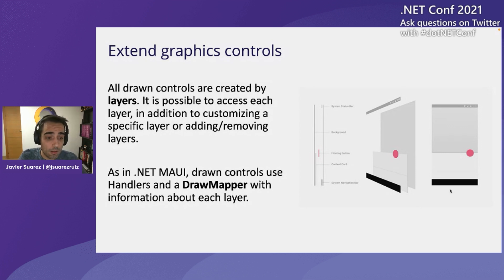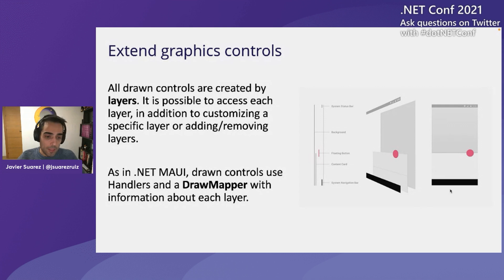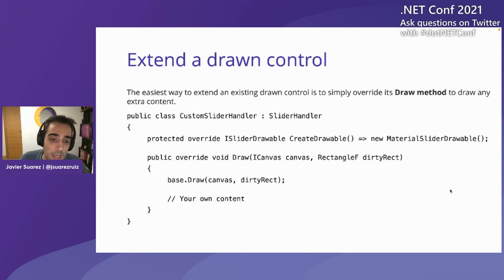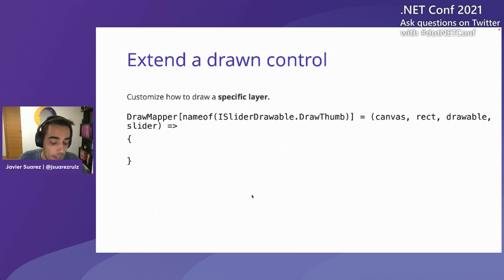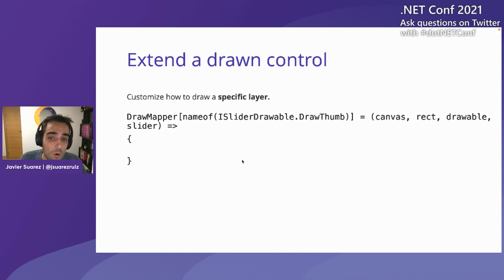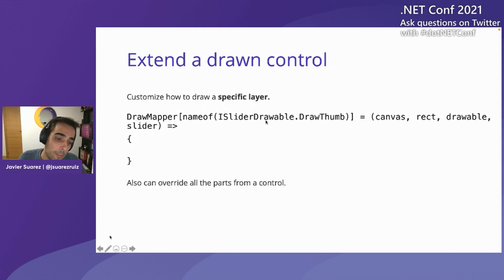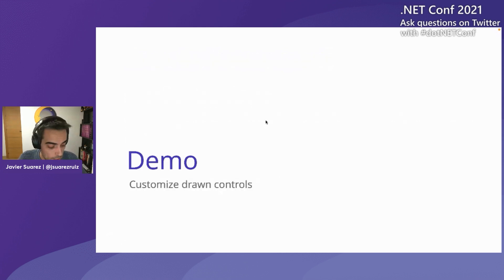As in .NET MAUI, we have the concept of handlers and a draw mapper. In this case, it's mostly the same as the mapper concept, but instead of mapping between properties of the abstraction to a method, we are mapping from layers to a method where we draw that layer. Extending a control is really easy — the simplest way is to overwrite the control you want to customize, in this case the Slider, and overwrite the draw method to draw your own content on top or behind the existing content. You can also access any specific layer and overwrite what you draw in that layer.